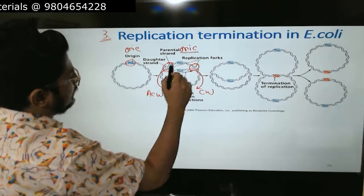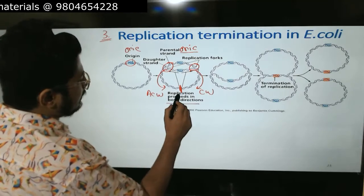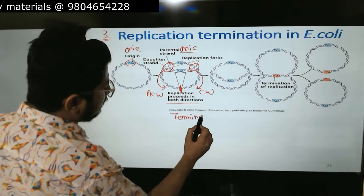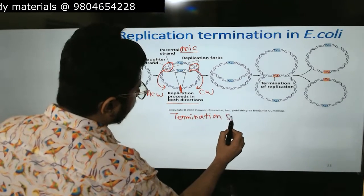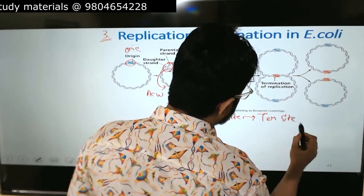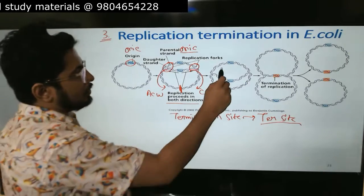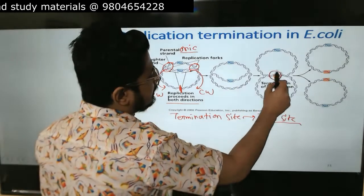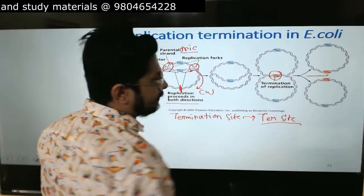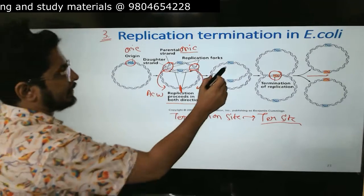Almost 180 degrees opposite to the origin of replication - almost, not exactly 180 degrees - this is where the termination site lies. The termination site, which is also known as ter site. Forks move in opposite directions, this is the termination site where they meet and are separated from each other.